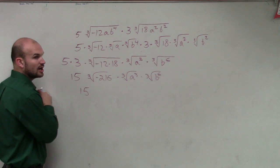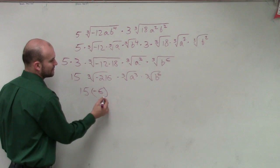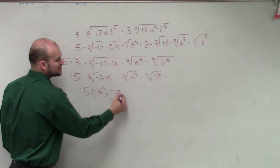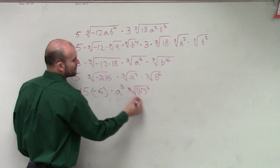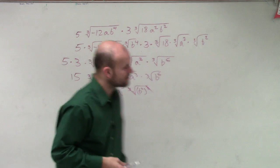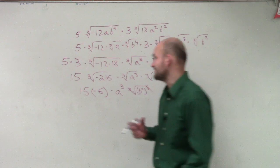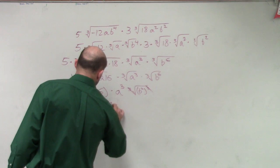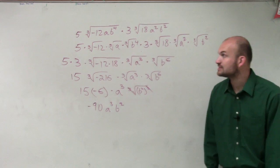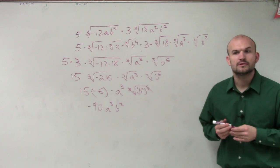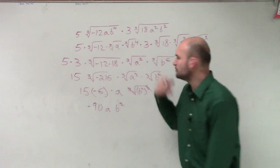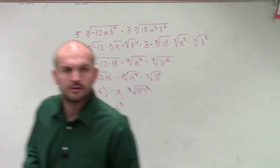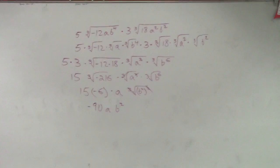Well, so we have 15. The cube root of negative 216 is negative 6 times the cube root of a cubed is just going to be a. And the cube root of b squared, we can rewrite, or b to the 6 is b squared cubed. So therefore, so we have 15 times negative 6, which is going to be negative 90. So we have negative 90 a times b squared. And that's going to be your final answer. OK? What is a now? Oh, it is a. Thank you. The cube root of a cubed, you're right. You're going to write that down. What is that negative 90? Thank you very much.